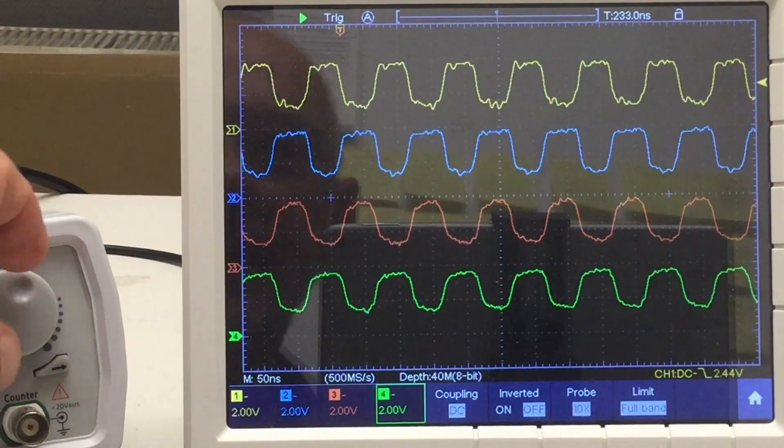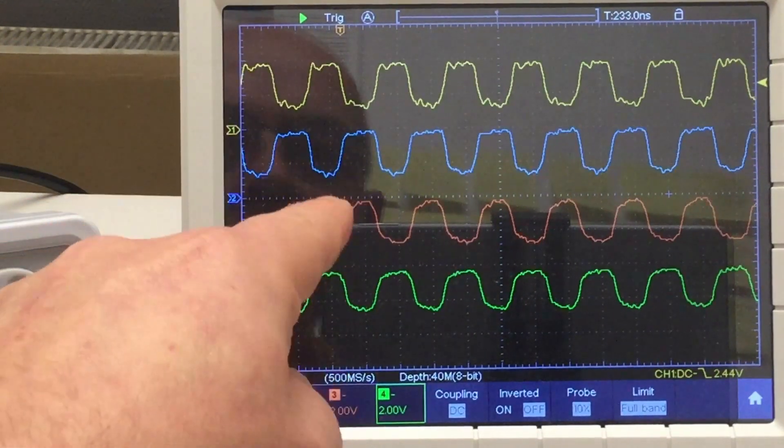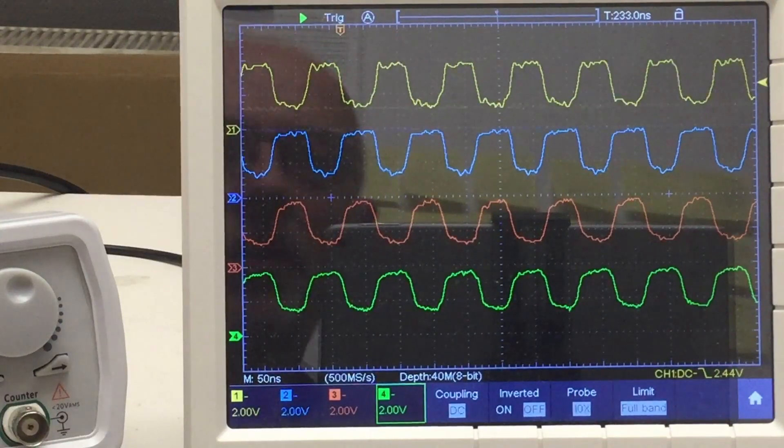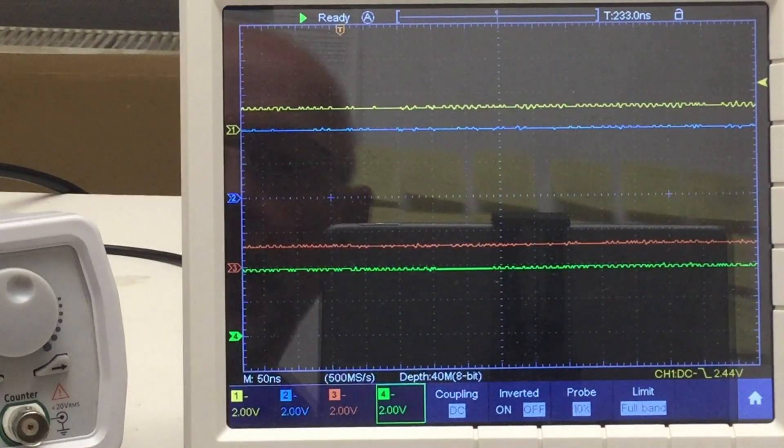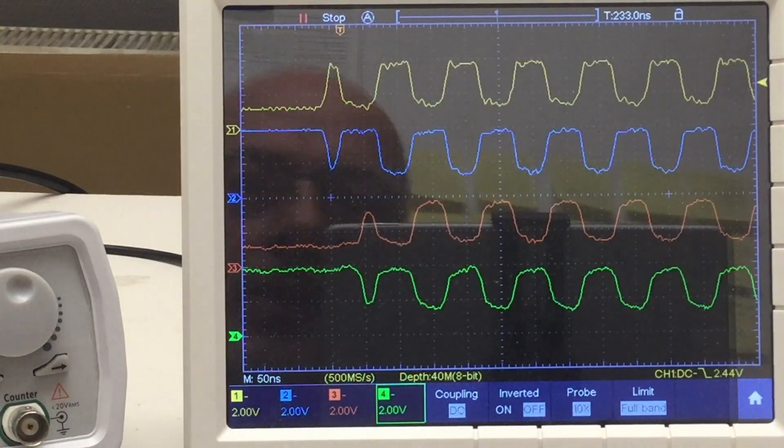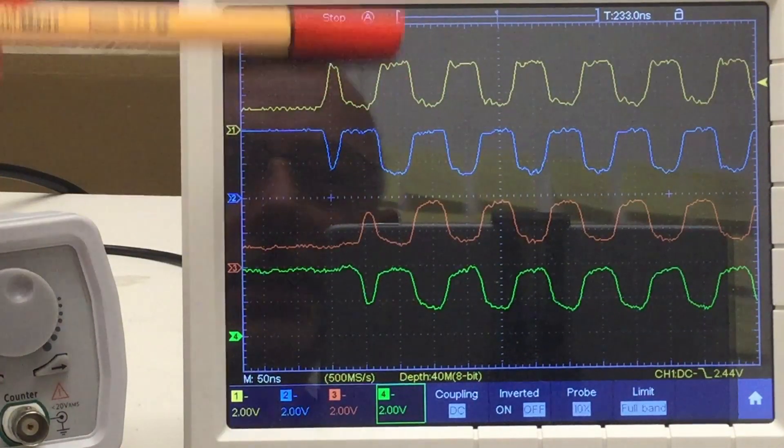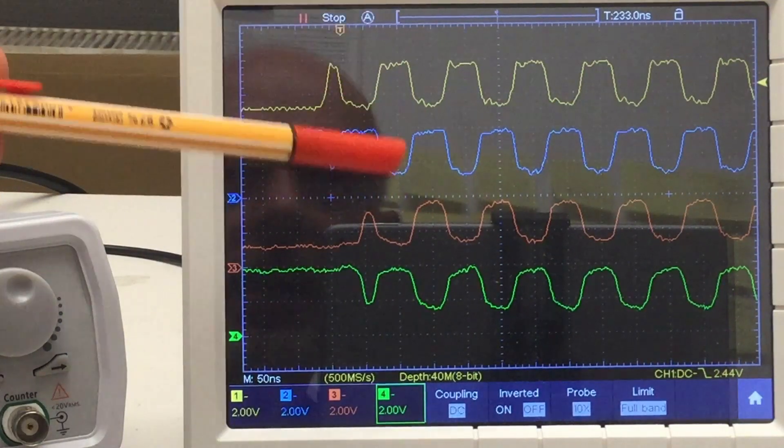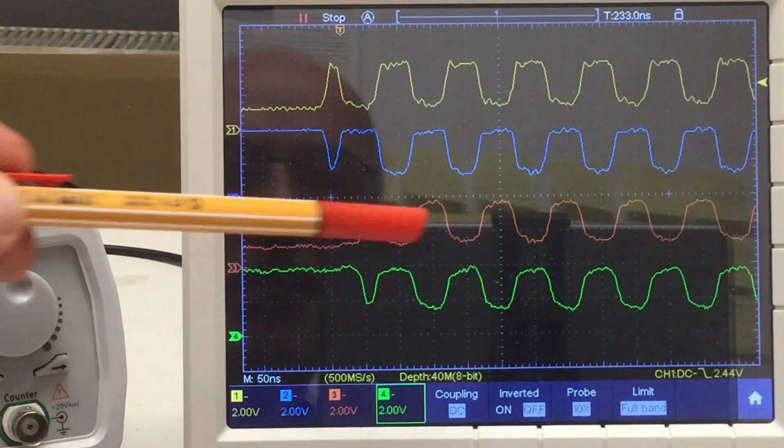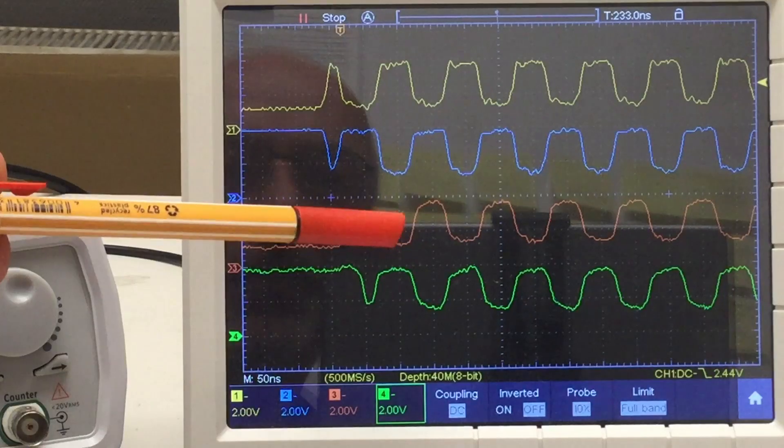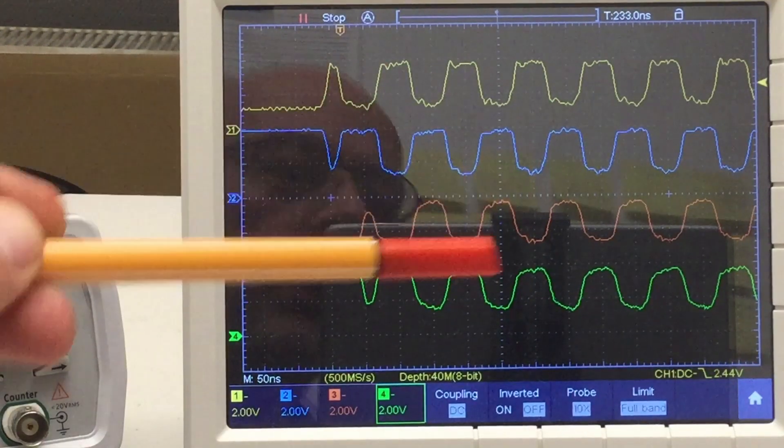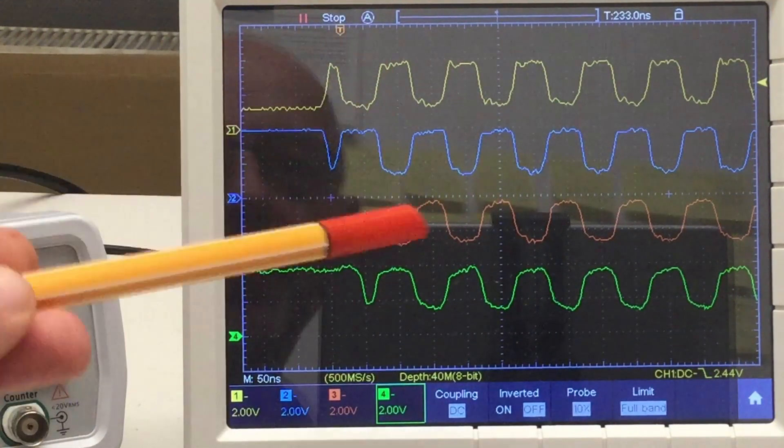But, again, let's single capture with the function generator off to show the timing relations. And fire in the hole. So, you see again here between this high-low and that high-low about 50 nanoseconds delay. That's really 10 meters of twisted pair cable. But what happens if we change the topology a bit?